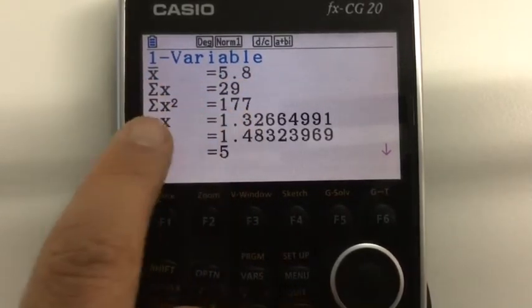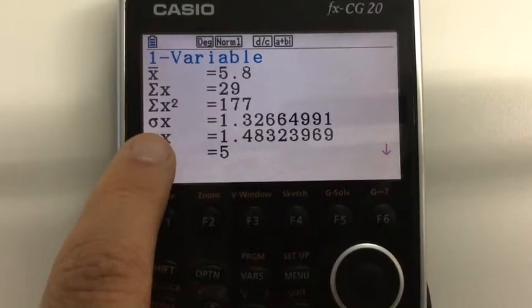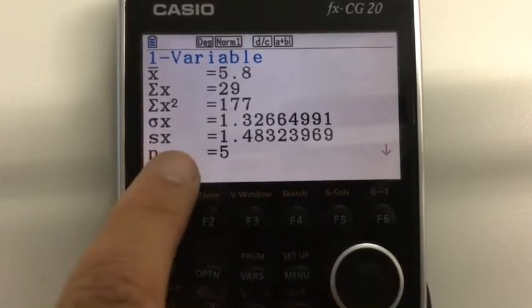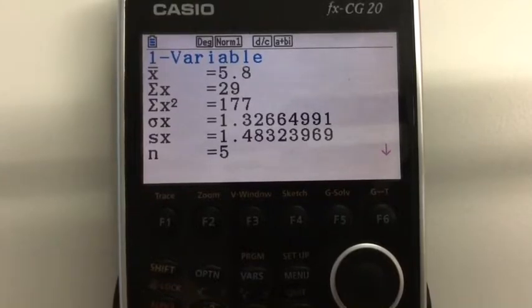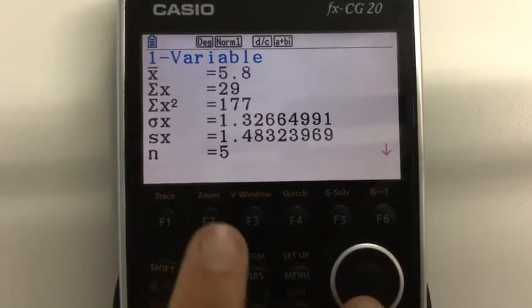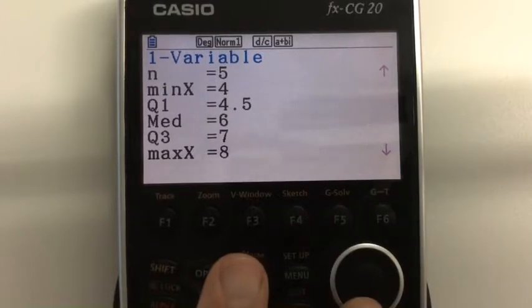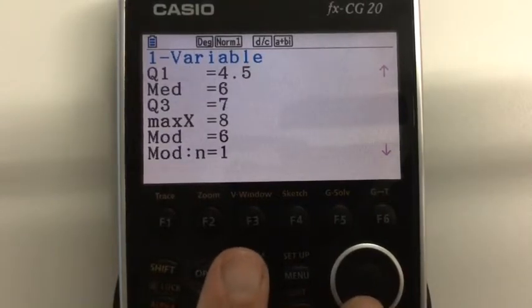So I press one variable and it's got all of these different calculations. We've got our mean value, sum of X, sum of X squared. We've got our standard deviation, this lowercase sigma X and SX, which is the population variance. But we don't need to worry about that one if we're just doing A-level maths. We've got N. And if we scroll down, we've actually also got the minimum values, the quartiles and so on. So it'll do each of those calculations for us.